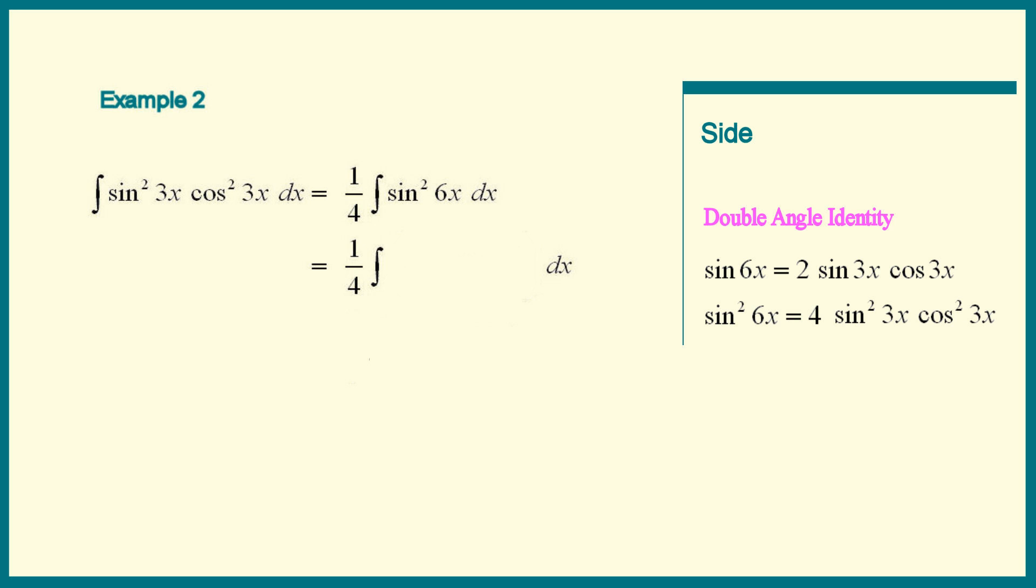We get the integral of 1 minus cosine of 12x over 2. Pull out the 1 half. We have 1 eighth times the integral of 1 minus cosine 12x.